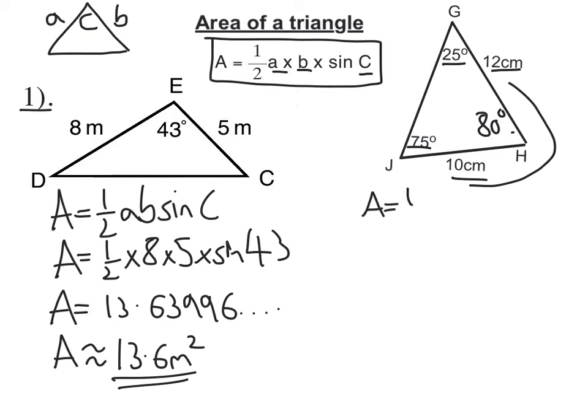So, write out the formula. A equals a half AB sine C. Sub in my values. So, a half times 10 times 12 times sine of 80.